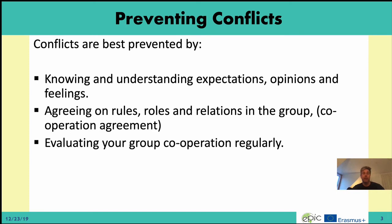A written cooperation agreement is an important part, especially in multicultural and international groups, because there can be different cultures. When you say everyone should meet on time or everyone should do what they promise, this can have really different meanings. Writing it down makes it much more precise and easier to agree on, and also easier to handle if the rules are broken. Making the implicit explicit is always a good idea in order to prevent conflicts.